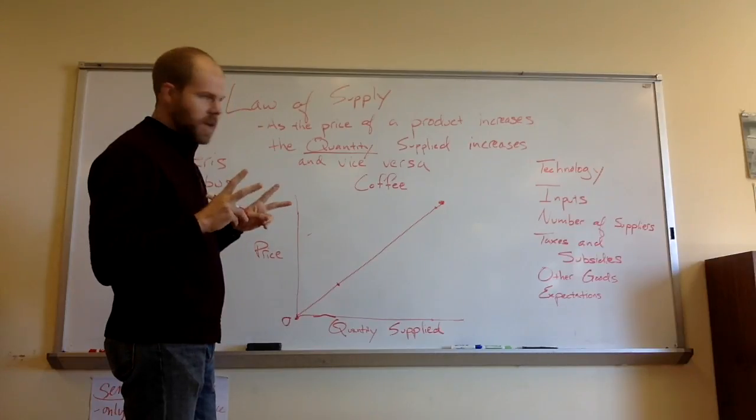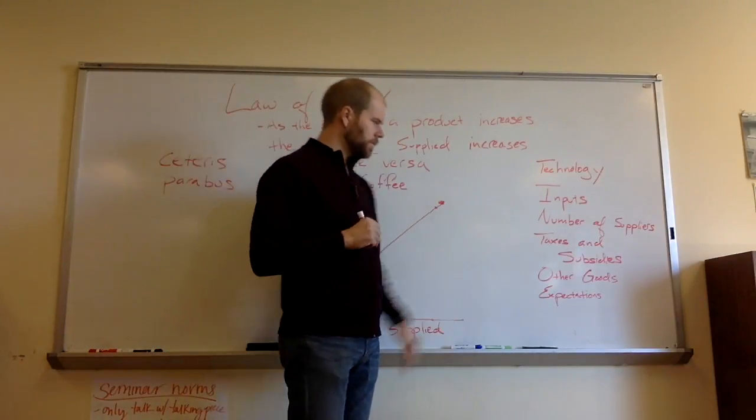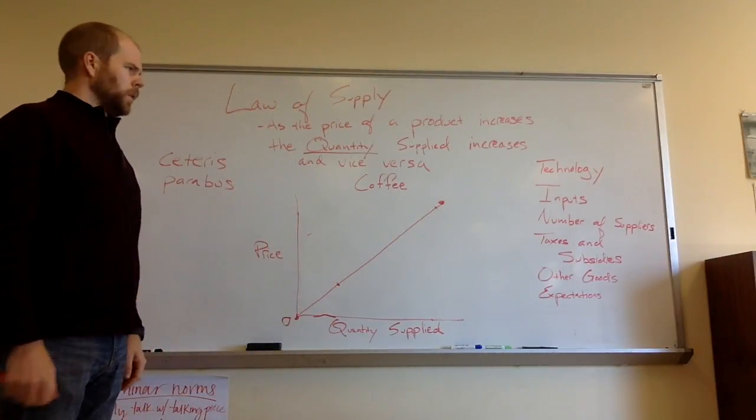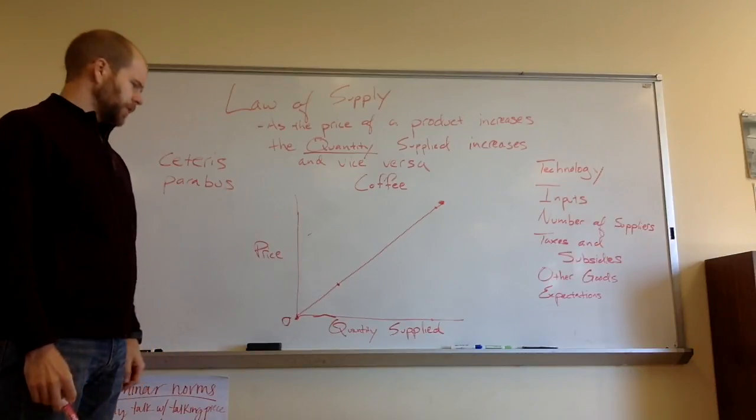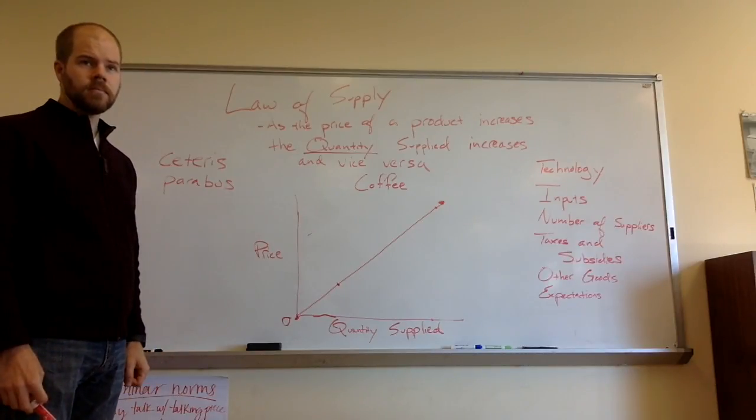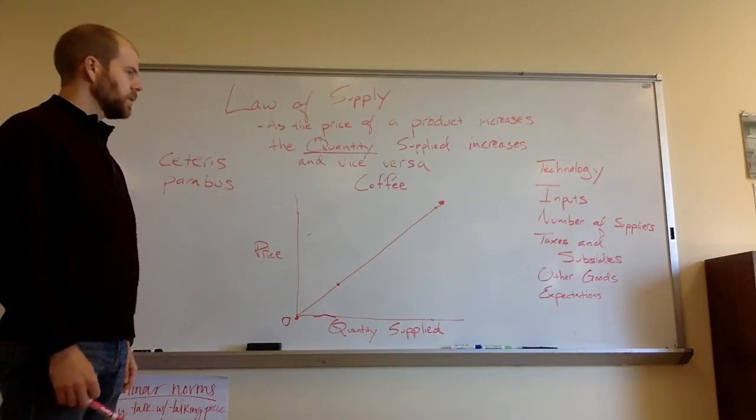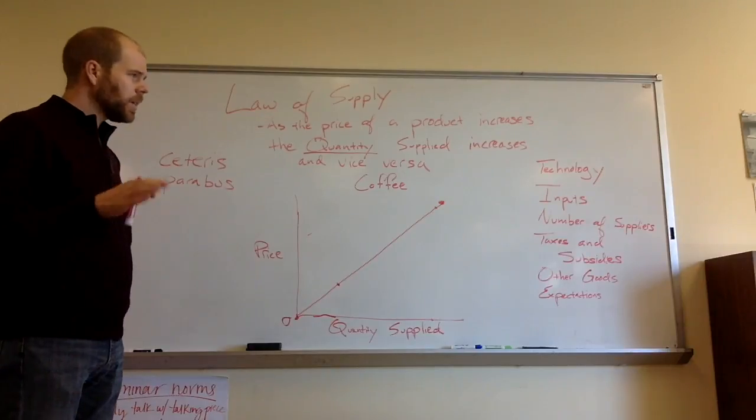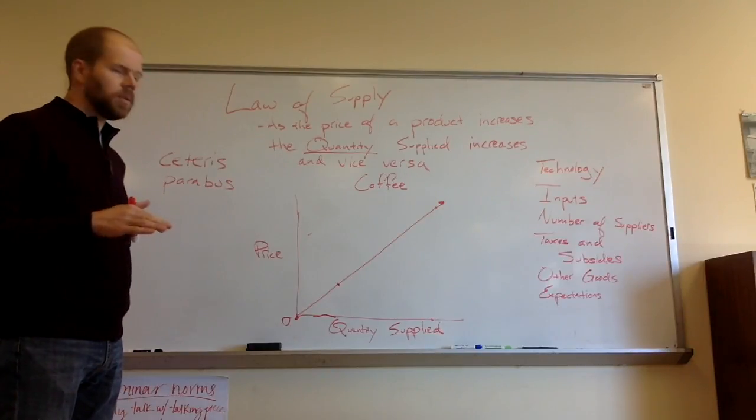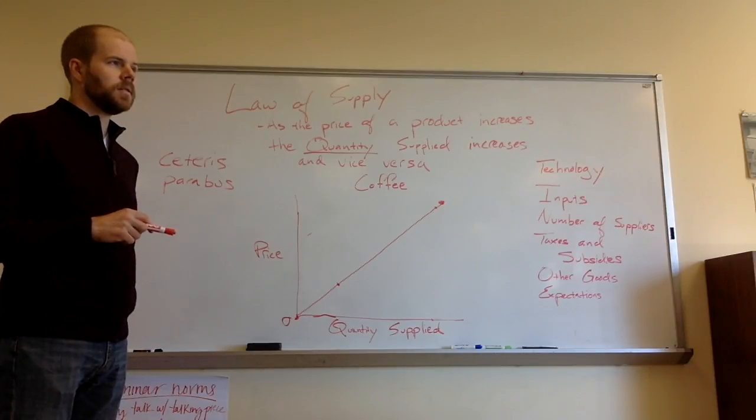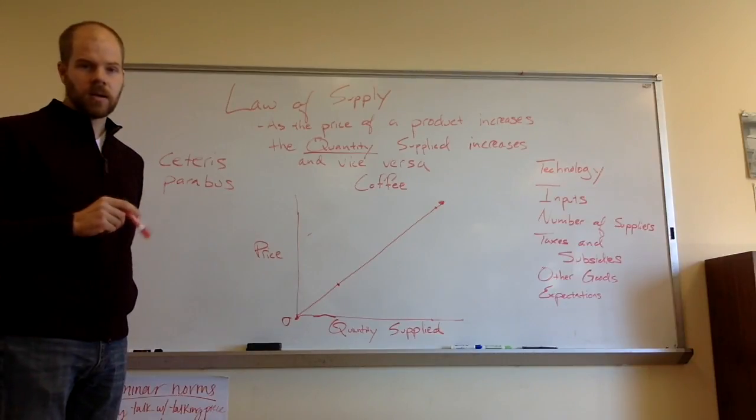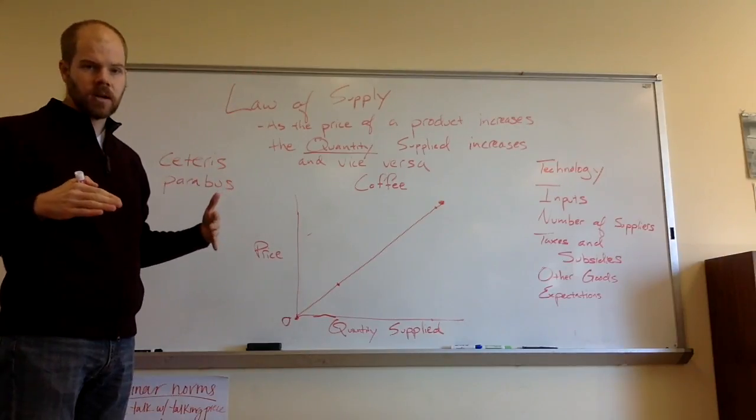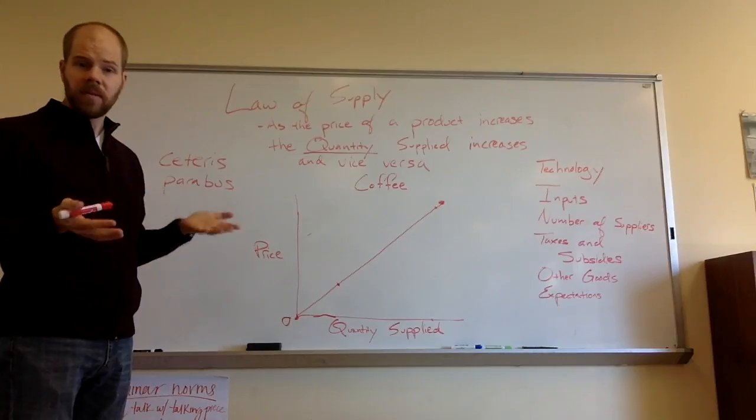Now, like yesterday, there's a couple things that can shift the entire supply curve. And we'll keep talking about coffee for this first one. So we'll talk about coffee technology. Let's increase the supply of coffee. Declan, what kind of technology could make coffee supply increase? Declan says, greenhouses in Minnesota and take all of our garbage and make big landfill mountains because coffee needs warm weather and high altitudes. Yeah, perfect, Declan.